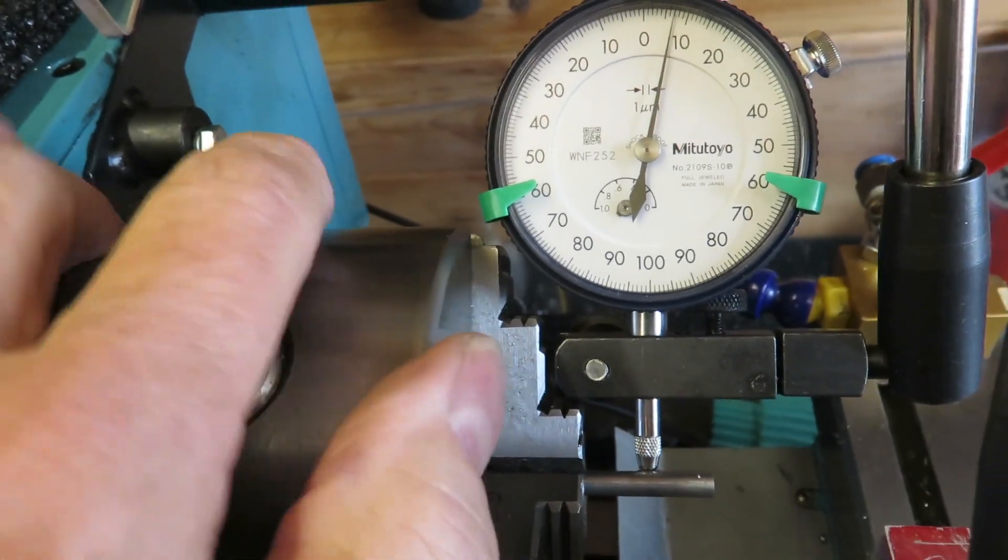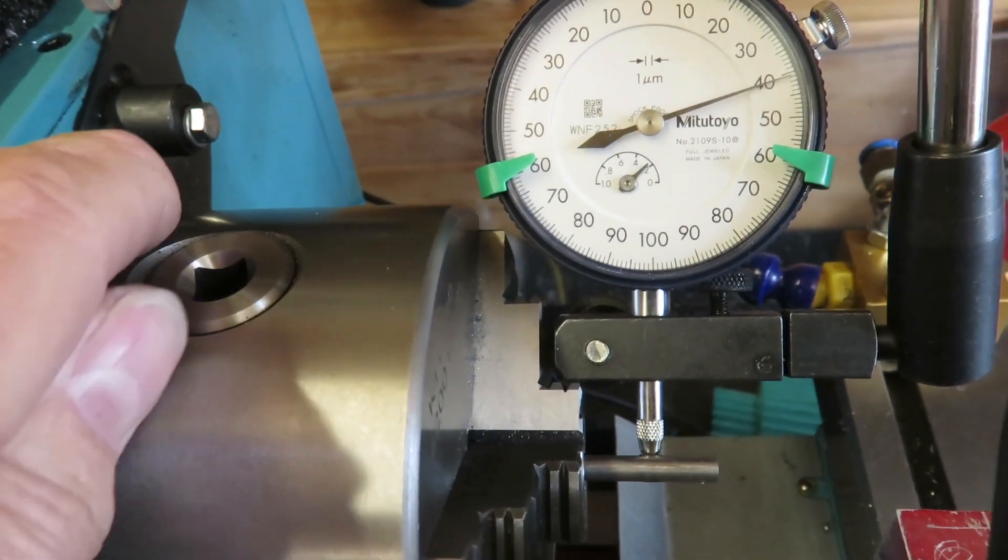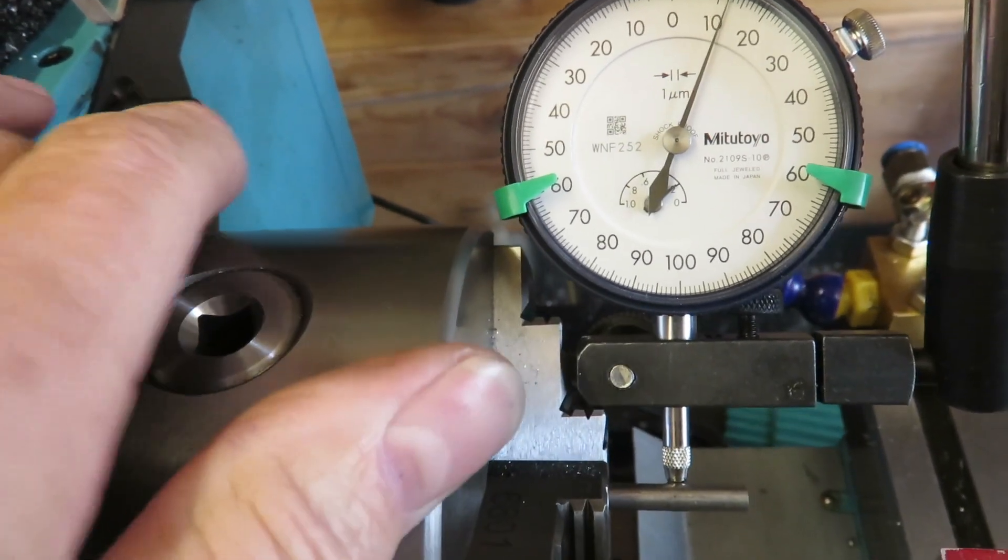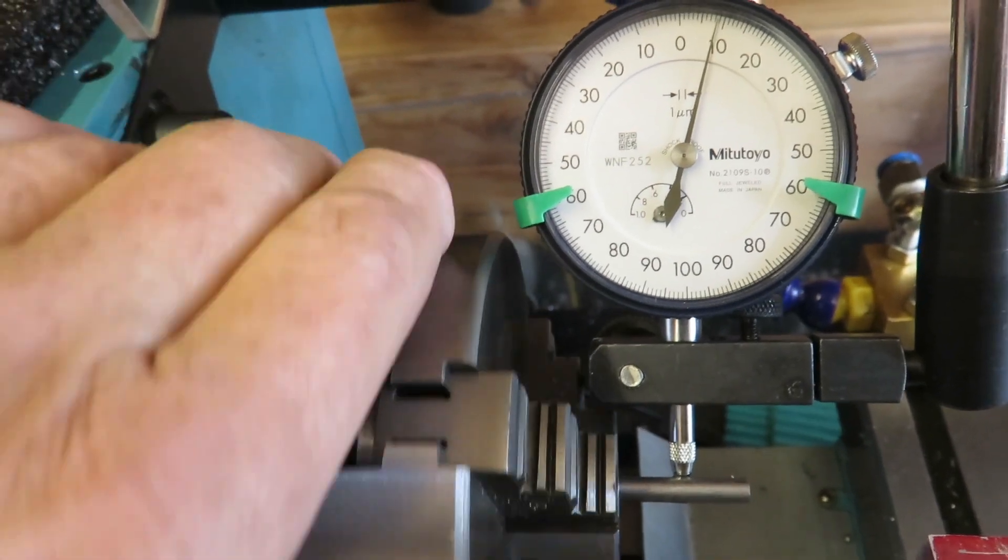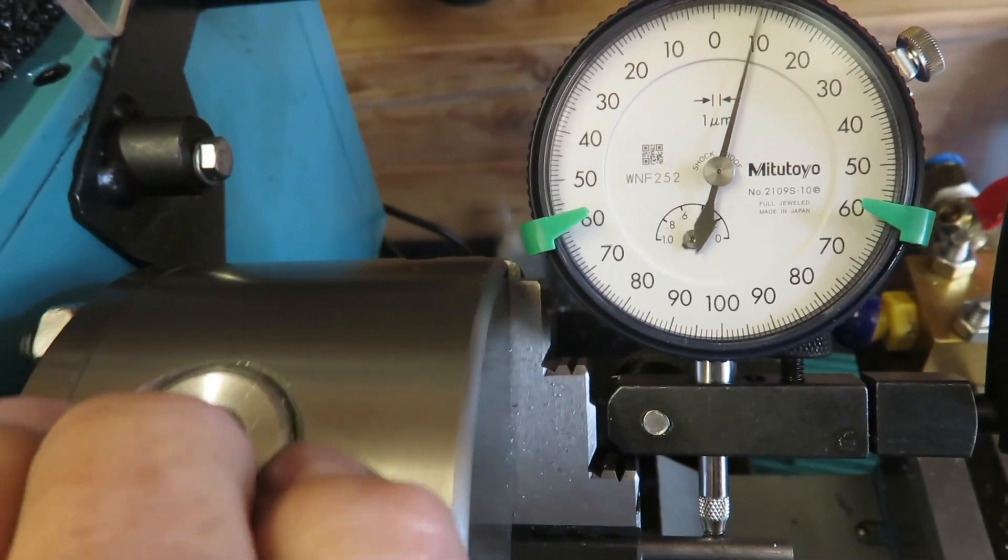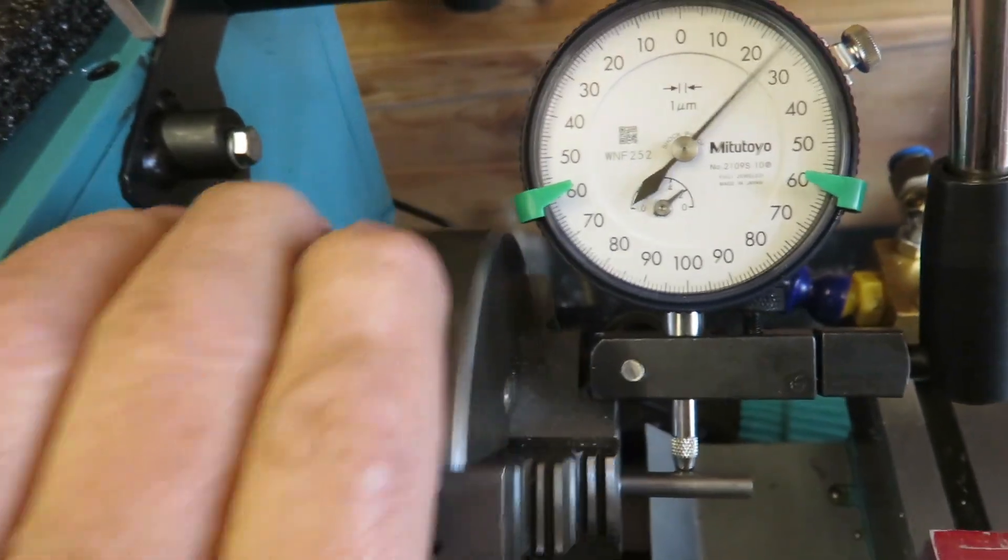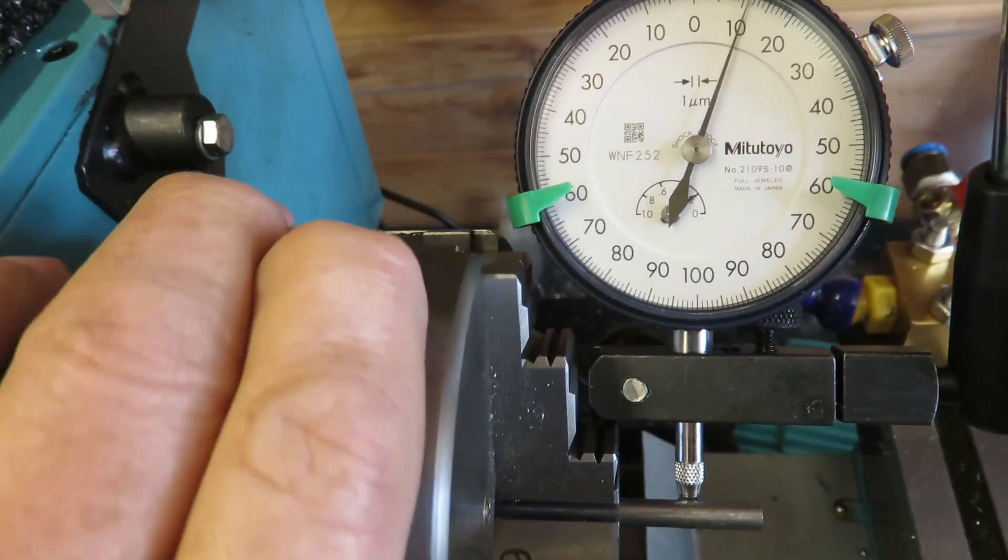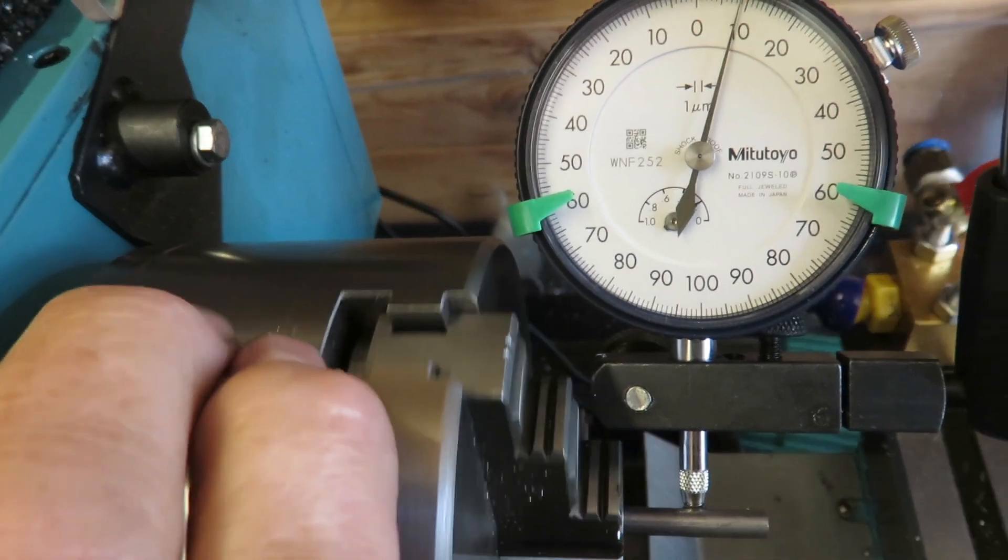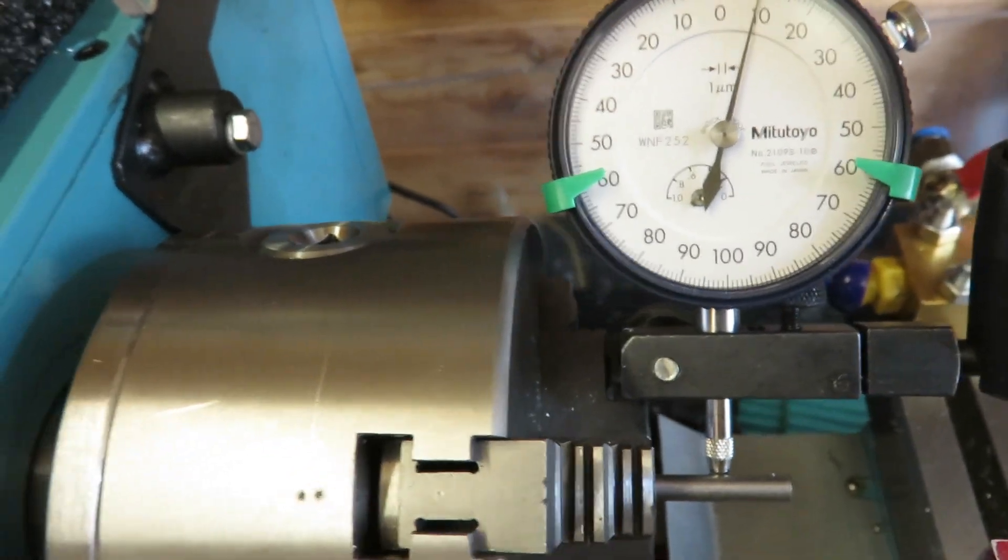So, 40 plus, 40 plus, plus 10, plus 40. So that's 30 micrometers run-out.